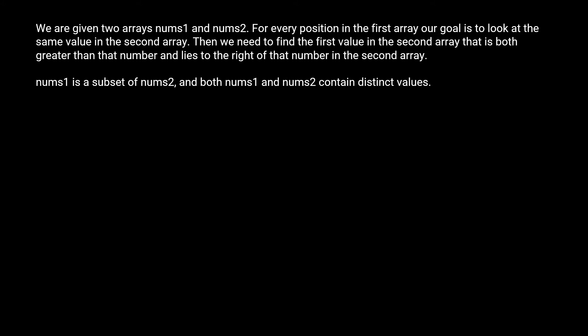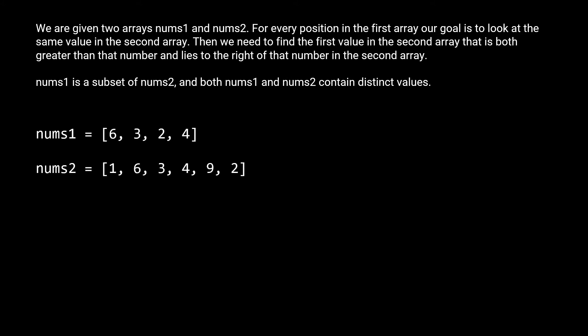This problem is a bit hard to describe and the wording can be confusing, so let's walk through an example to clear things up. We're going to return an array of the same dimensions as nums1. To find our answer we look at our first number, a 6, and we look for the same number in the nums2 array. Now we look at the numbers to the right of the 6 in nums2. The first number that is greater than the 6 and to the right of the 6 is the 9, so we fill in the first position of our output array with a 9.